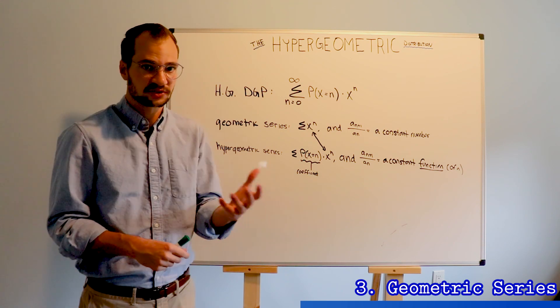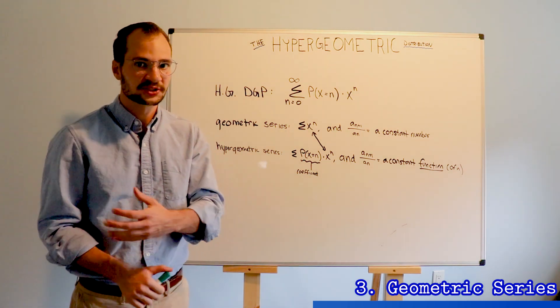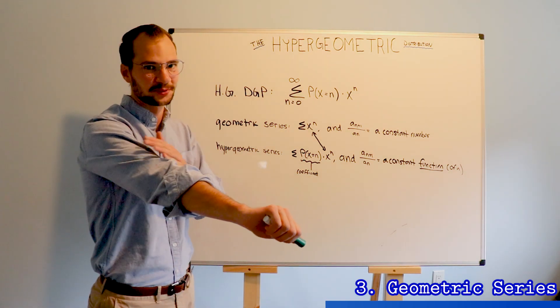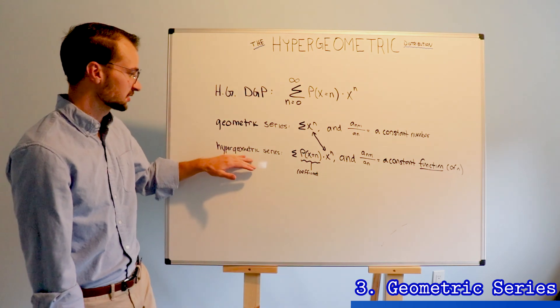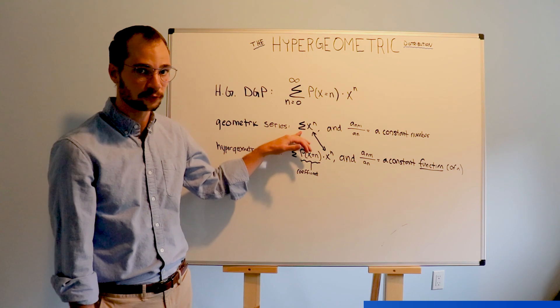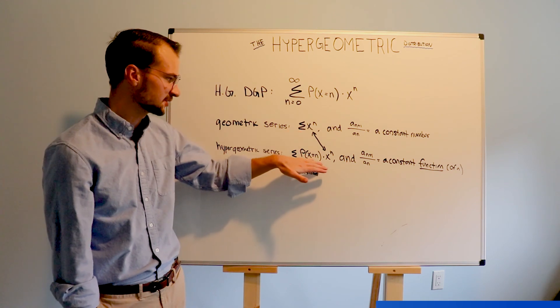The word hyper means more or beyond. Just like when you hyperextend your elbow, it moves beyond where it's supposed to move. Well, a hypergeometric series is beyond just a normal geometric series because it has this coefficient.